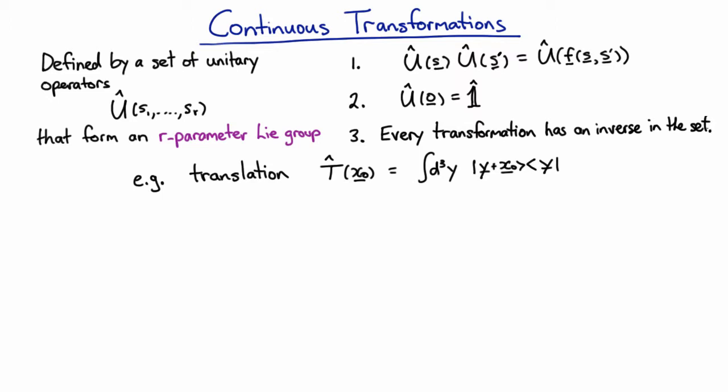It has every inverse of every transformation in it, and any pair of transformations that you do in a row leads you to another transformation still in the set.